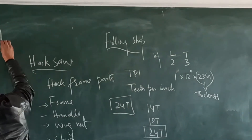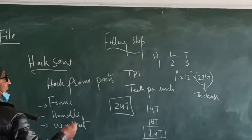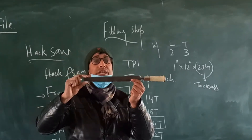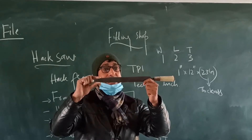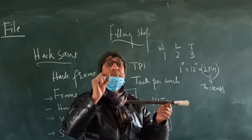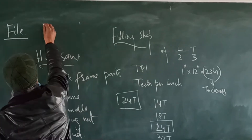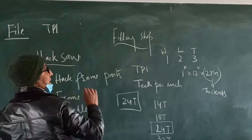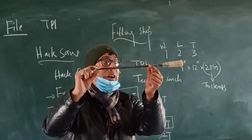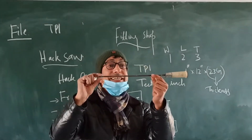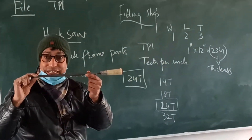So how do we categorize the file? We can categorize it by TPI — Teeth Per Inch. So this file is determined by teeth per inch. That is the first category.